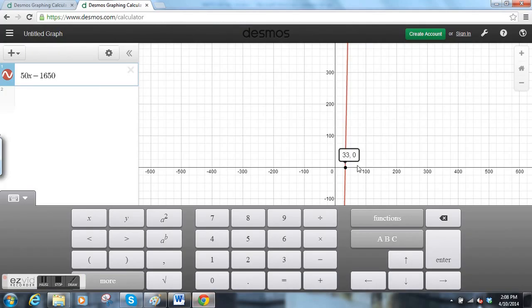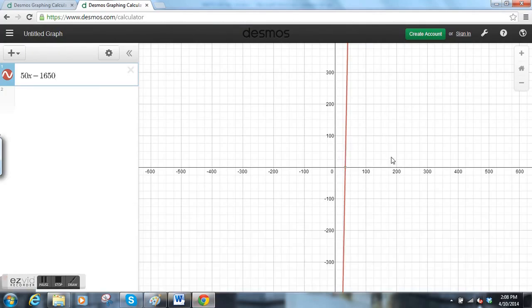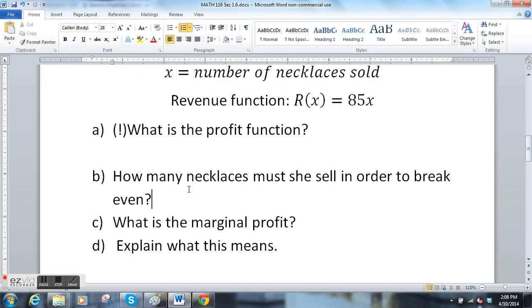You can see that again on this graph—33 is the point where it crosses the x-axis. So how many must she sell to break even? 33. What is the marginal profit? Again, I made up this question. If you're looking in your book you'll say it didn't ask that question. Well, I'm asking you that question and I'm the teacher and I might put it on the test.